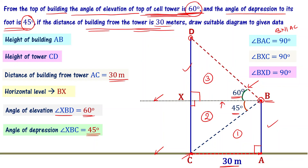Another important thing to note here is that BX and AC are parallel lines. Because they are parallel, the 45-degree angles formed are alternate interior angles.